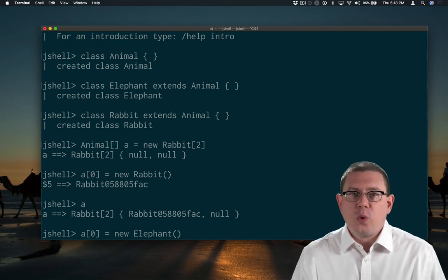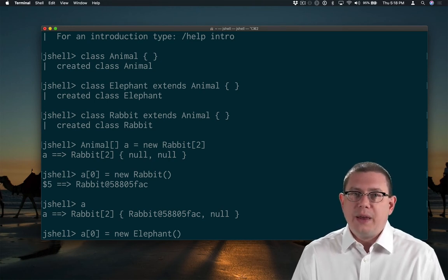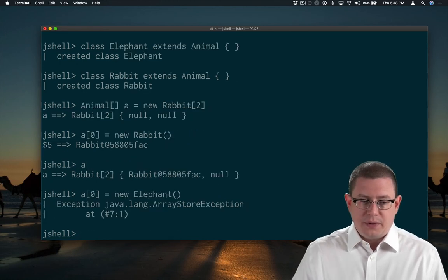What if I tried to put an elephant in this array? Should that code work? Well, the first element of that array is, according to the type of the array, an Animal. I just happened to stick a Rabbit in there before. So could I stick an elephant in there now? No. That compiles. There's no type error there.